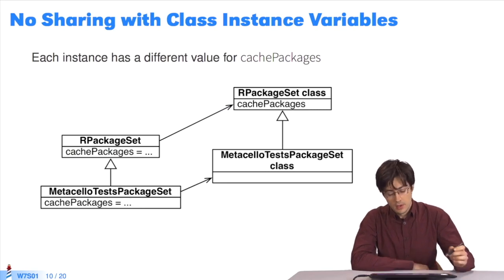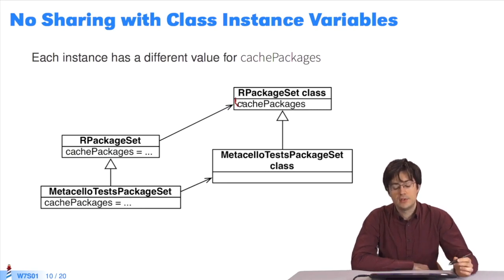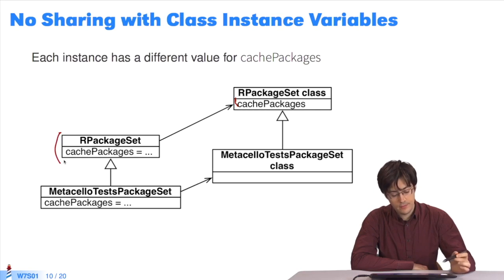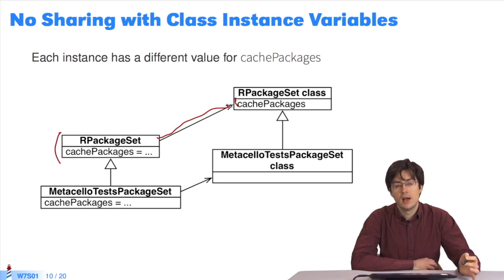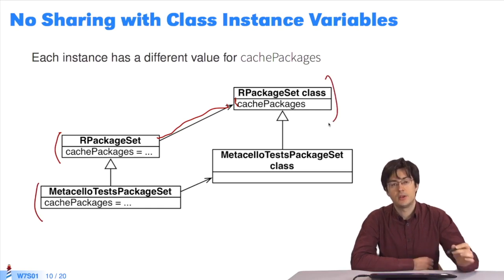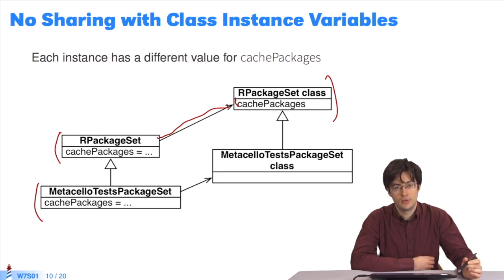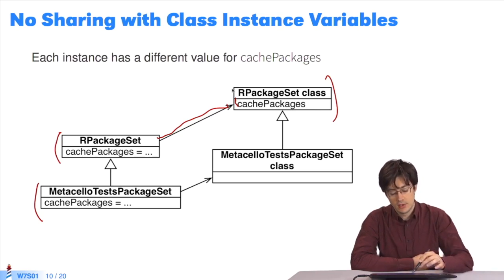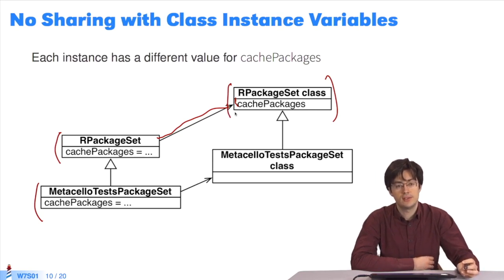Here is an example. The variable cachePackages is defined in the metaclass rPackageSet class. This means that the rPackageSet class, which is an instance of the metaclass, has a value associated with this variable. Similarly, all instances of the subclasses of the rPackageSet class have a specific value for that variable, which is a different value. There's no sharing here. Each instance of the rPackageSet class, or its subclasses, has its own value for this variable. Class variables and instance variables on the class side are different things.